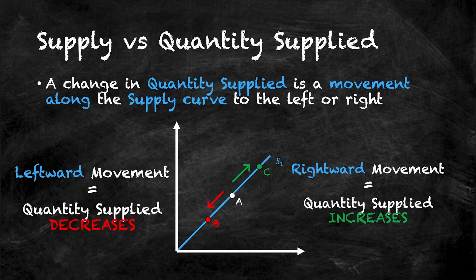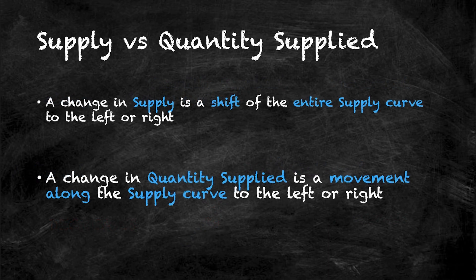So to summarize everything into one key piece of information for you to remember for your unit test, midterm or exam, it's that a shift in the entire supply curve to the left or right signifies a change in supply, while a movement from one point to another along the same supply curve signifies a change in quantity supplied. In both cases, a leftward movement is a decrease and a rightward movement is an increase.